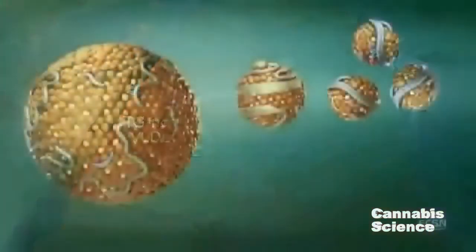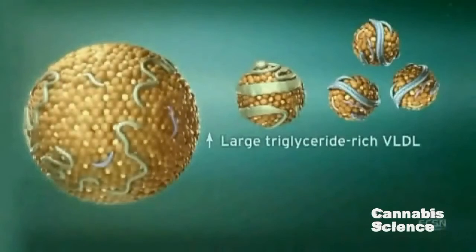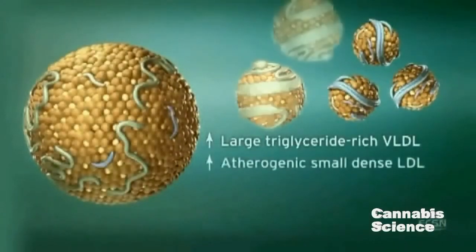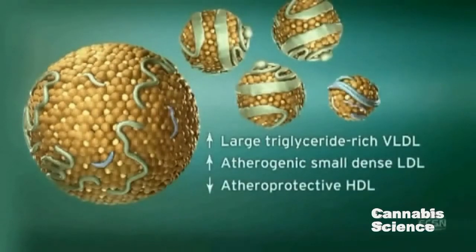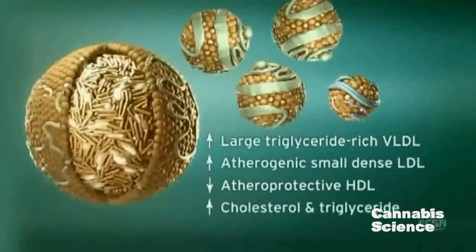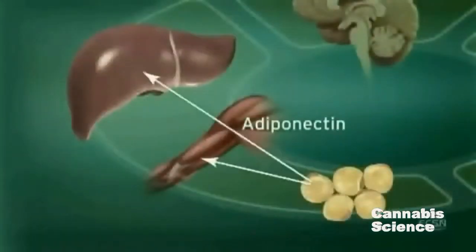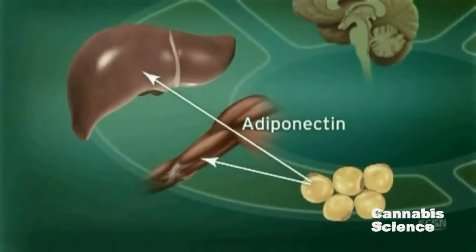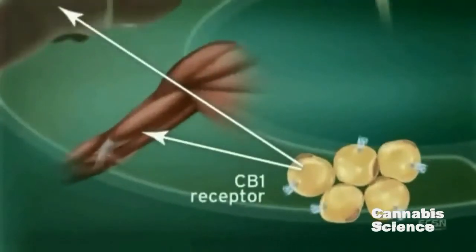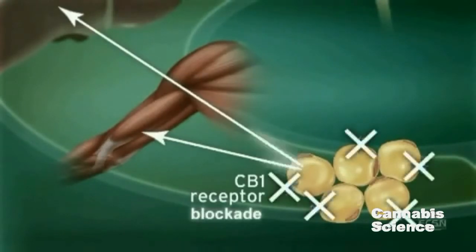Large triglyceride-rich VLDL sets the stage for the atherogenic lipid profile of small, dense LDL, decreased levels of athero-protective HDL, and overall increases in cholesterol and triglyceride levels. Adiponectin, another hormone secreted by adipocytes, regulates lipid and glucose metabolism. Adiponectin is believed to regulate fatty acid oxidation in muscle and liver, thus improving insulin sensitivity. CB1 receptor stimulation in adipocytes reduces adiponectin, while CB1 blockade increases adiponectin synthesis.